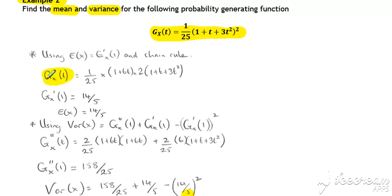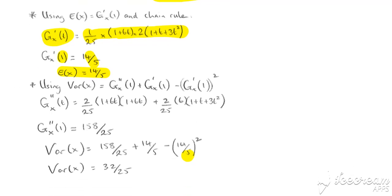To differentiate once we need to use the chain rule, so multiply by the two and reduce the power by one, but also multiply by the differential of what's inside the bracket. So when we differentiate once we get this expression. Substitute in t as one and we get 14/5 as our expected value of x.